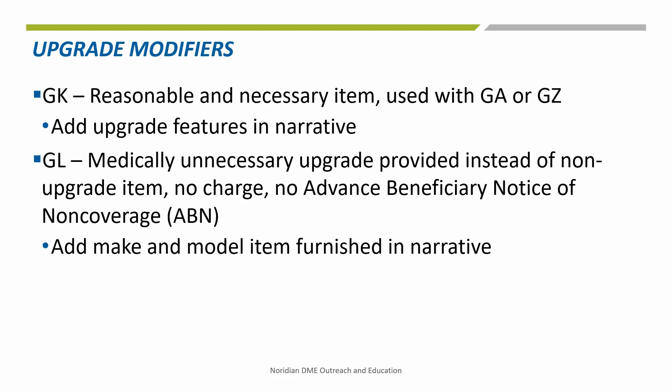By billing appropriate modifiers, it helps automate the claim processing. Remember to add the appropriate modifier depending on the scenario. When using the GK modifier, the upgrade features are to be entered into the narrative. When using the GL modifier, the make and model of the item actually furnished should be entered in the narrative. When a narrative is required, ensure the information is included in the narrative field of the NTE line level segment of the 2400 loop of the electronic claim, or item 19 of the CMS 1500 claim form.